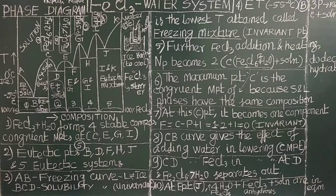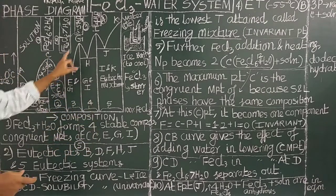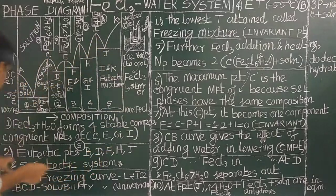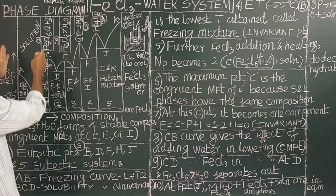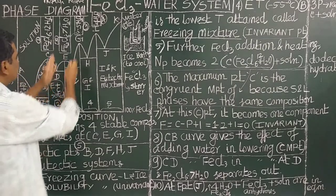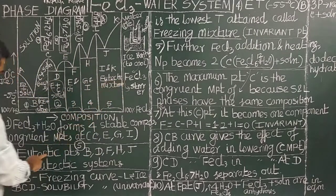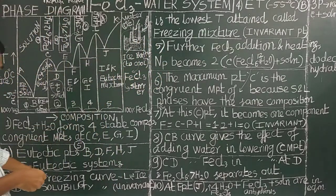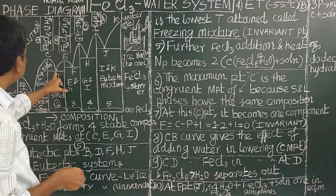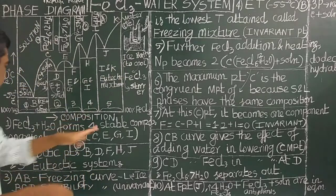As mentioned, ferric chloride and water form four stable compounds with congruent melting points at C, E, G, and I. The eutectic mixture is called the freezing mixture because the lowest temperature is attained. The phase diagram of the ferric chloride-water system consists of five simple eutectic systems and five eutectic points: B, D, F, H, and J.